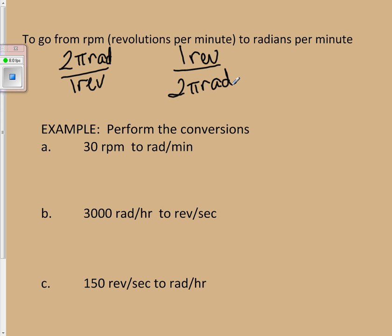These are our unity fractions. Our straight conversion is the fact that we have 2 pi radians, which is 1 complete revolution.